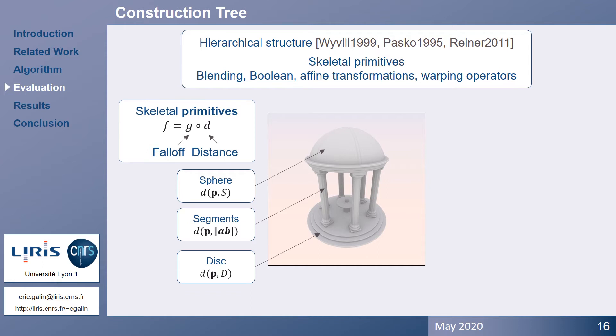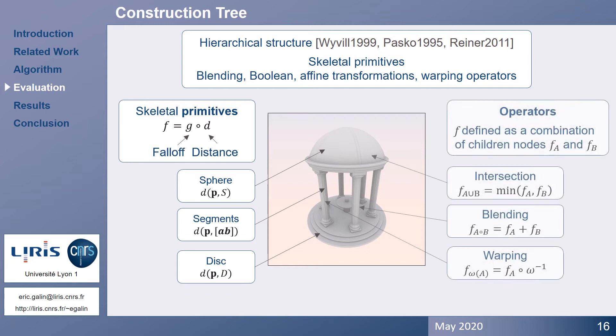Here, a sphere primitive was used to create the roof, and segments were used to create the pillars. The internal nodes of the tree contain operators such as intersection, blending, or warping. Here we used an intersection with a box to cut the sphere of the roof in half, and warping could be used to carve decorations in the pillars. The challenge consists in defining the Lipschitz bounds for all types of primitives and operators.